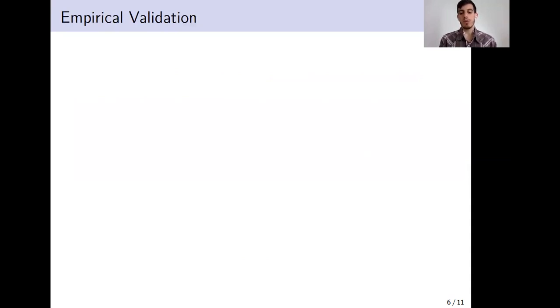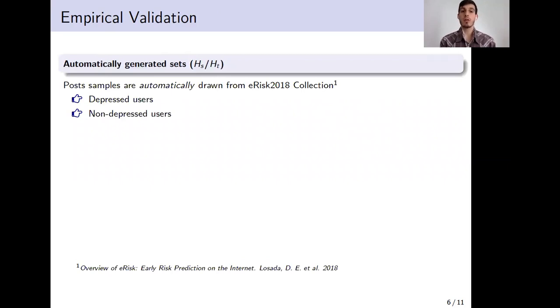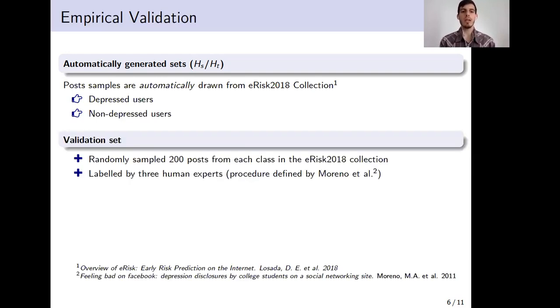Now, the following step is to validate the methodology and the heuristic defined. To do this, we're going to automatically draw the posts from the ERIS 2018 collection. This collection is comprised of two groups of users, depressed and non-depressed, along with their history of textual posts. The goal of this validation step is to verify or determine whether a classification model trained with the automatically generated sets is able to effectively distinguish between posts which are expressing or providing some evidence of depression signs from those which do not. And for this reason, we also create a validation set by randomly sampling 200 posts from each class in the ERIS 2018 collection, and we ask three human experts to label them.